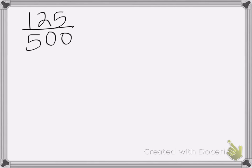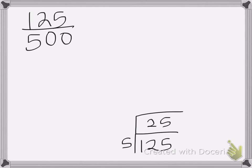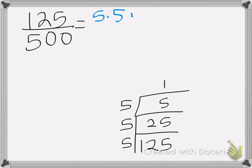We'll do it one more time. This time we have 125 over 500. We need to do division by primes to figure out the prime factorization. Divide by 5 — 5 goes into 12 twice, that's 10. 12 minus 10 is 2, bring down the 5 is 25. 5 goes into 25, 5 times. Divide by 5 again — 25 divided by 5 is 5. And the last time, 5 divided by 5 is 1. So this equals 5 times 5 times 5.